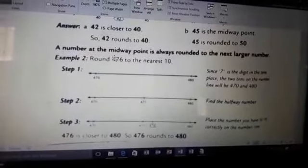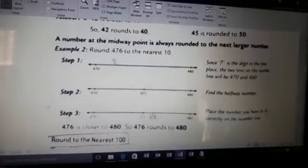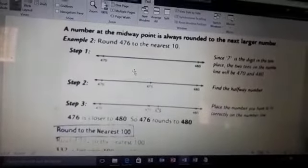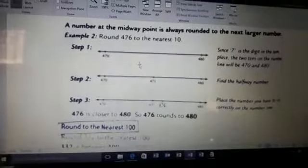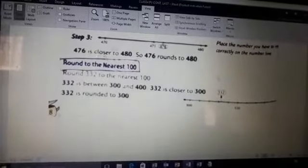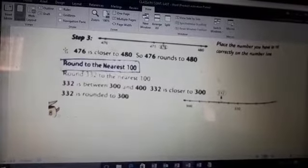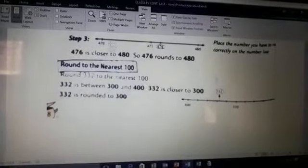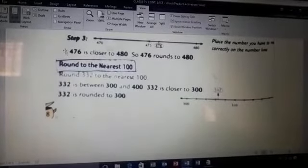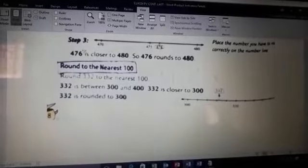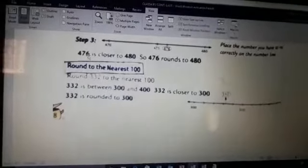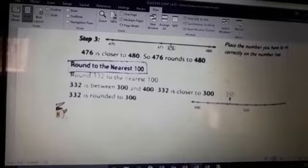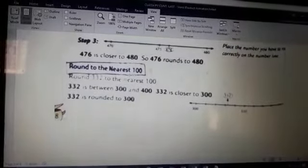What we will learn in this is the rounding numbers to the nearest hundred also. Up to tens we already read, but nearest hundred means we will consider the hundredth place. Take the example of 476. It is closer to 480 or 470. As it is after 476, so it will be rounded to 480. It will be for tens, but in case of rounding to nearest hundred...